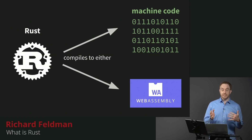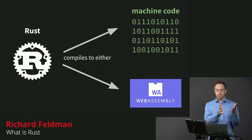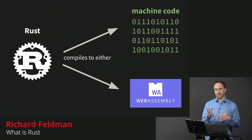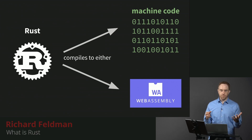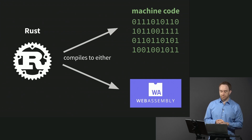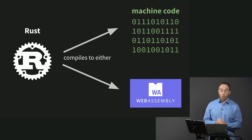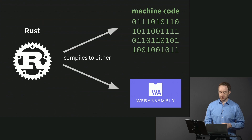Rust is a language that compiles to either machine code — which would mean a binary executable, like a .exe on Windows or just a binary on Mac or Linux — or to WebAssembly, which lets you run it in the browser.